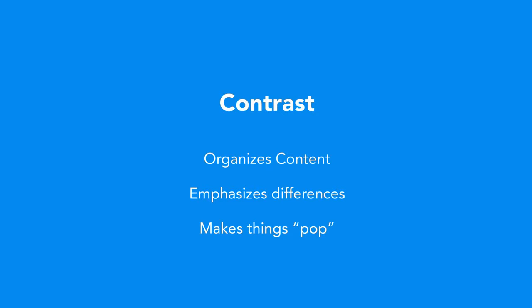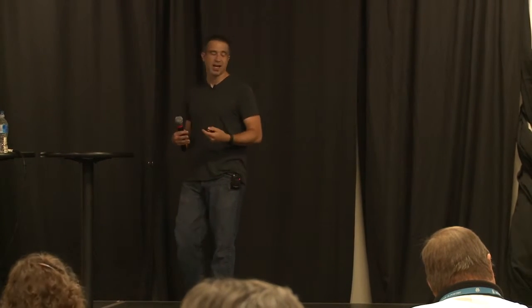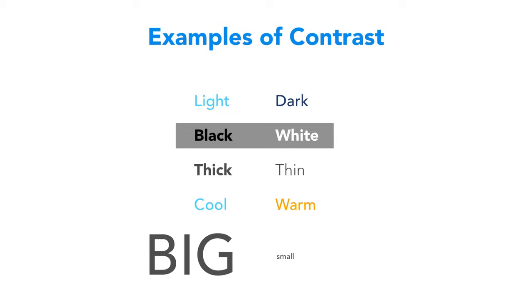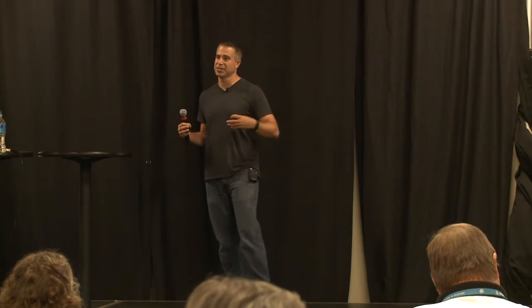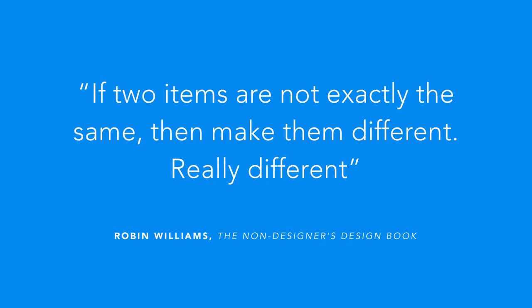Let's start with contrast. Contrast helps you juxtapose things, organize your content, and highlight differences. When clients say 'can you make this thing pop?' — what they usually mean is there's not enough contrast; things are all mushing together. You might have light and dark elements, thin and thick lines, different text weights, cool and warm colors contrasted side by side, or differences in size. Robin Williams in 'The Non-Designer's Design Book' puts it well: 'If two items are not exactly the same, make them different — really different.'